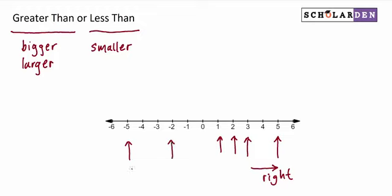When we see a 5, we tend to think that's bigger than 2. But in negative land below 0, that's not true. Negative 2 is to the right of negative 5, so we say negative 2 is greater than negative 5.